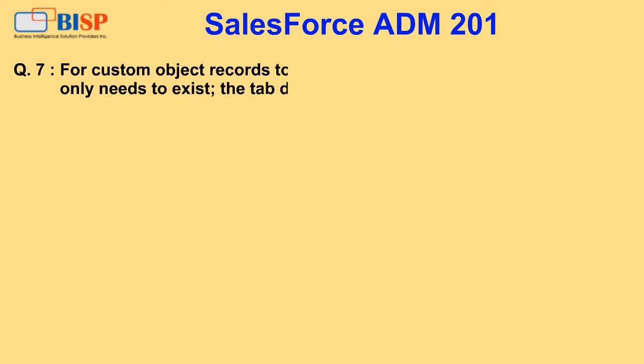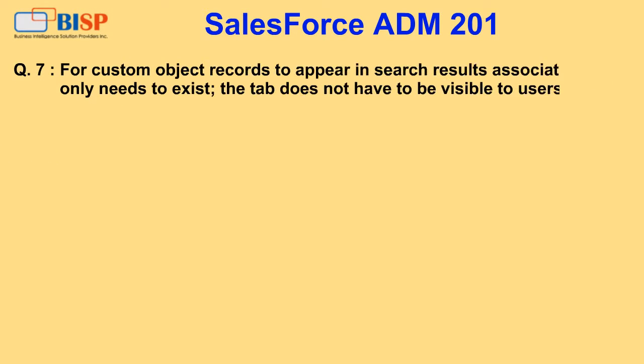Question 7. For custom object records to appear in search results, the associated tab only needs to exist — the tab does not have to be visible to users. A. True. B. False.